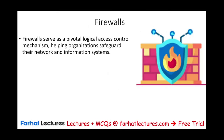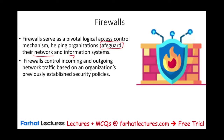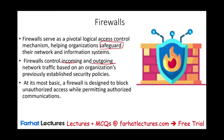Firewalls serve as an important logical access control mechanism. They help organizations safeguard their network, because this is how intruders come through. If they go through the network, they can get into your accounting information system or your information system in general. Firewalls control both incoming and outgoing network traffic based on whatever rules we establish — what's allowed and what's not. At its most basic level, a firewall is designed to block unauthorized access while permitting authorized communication.